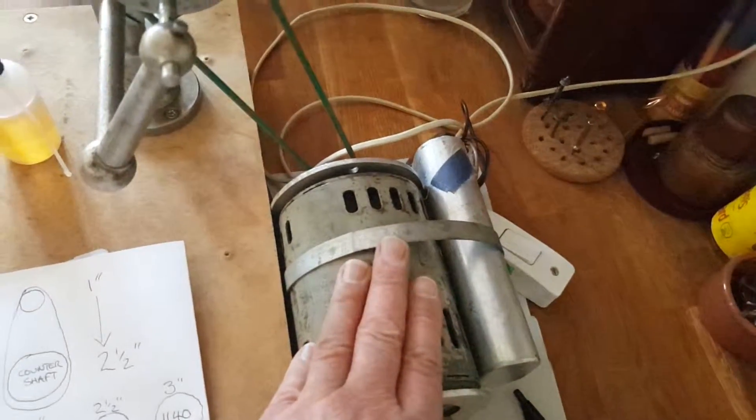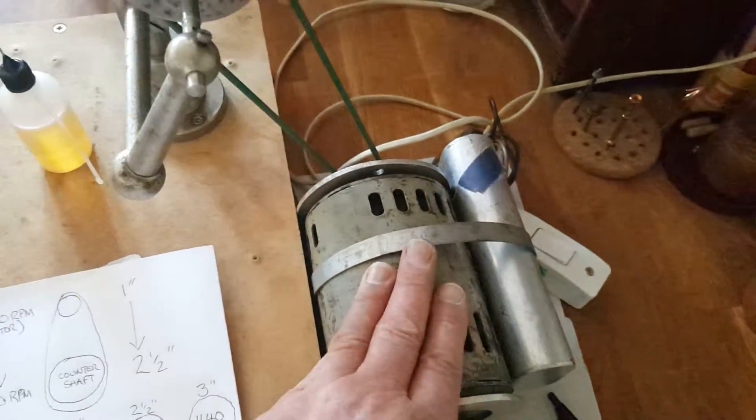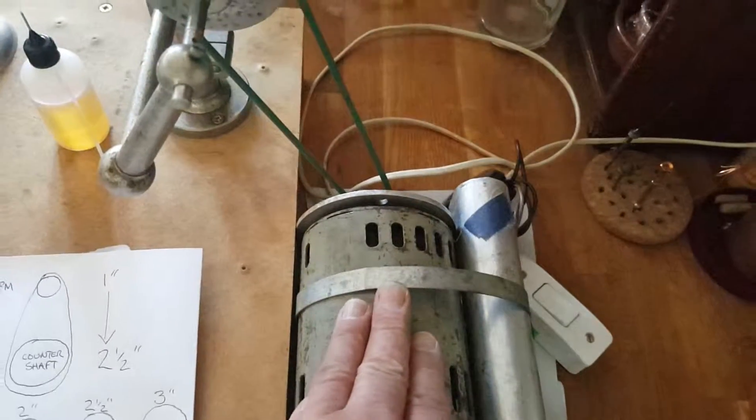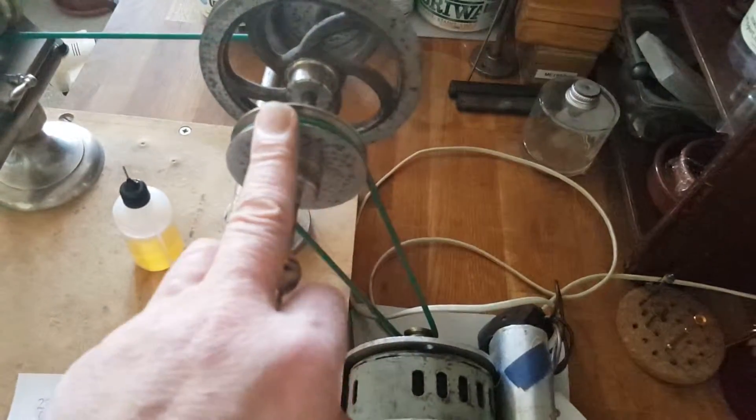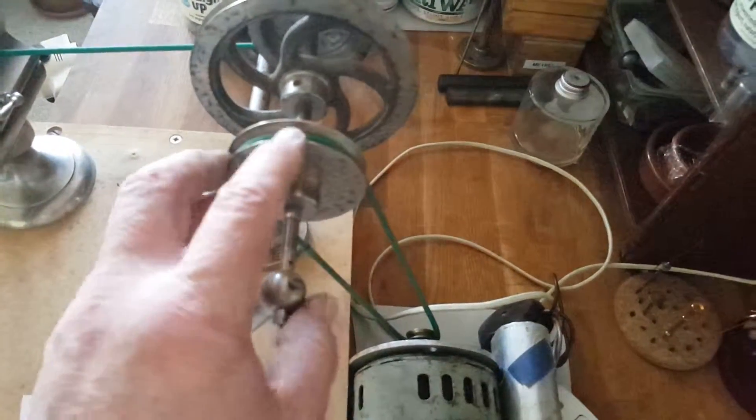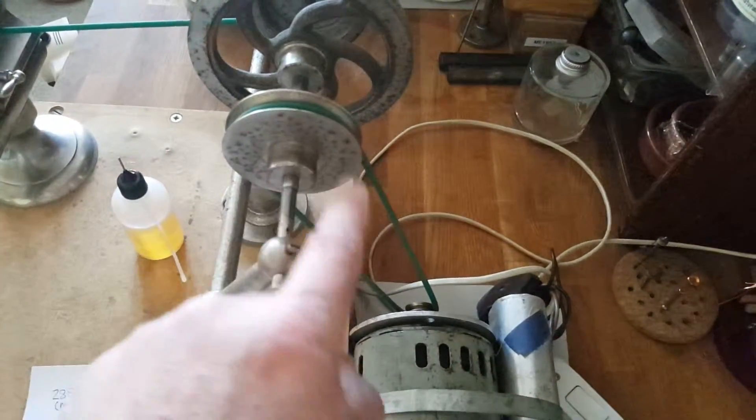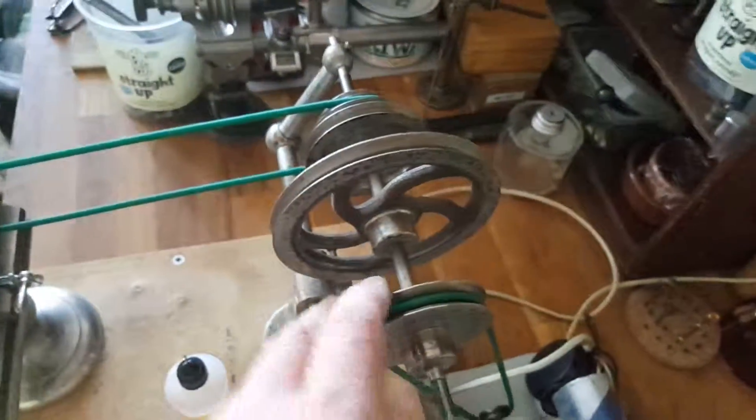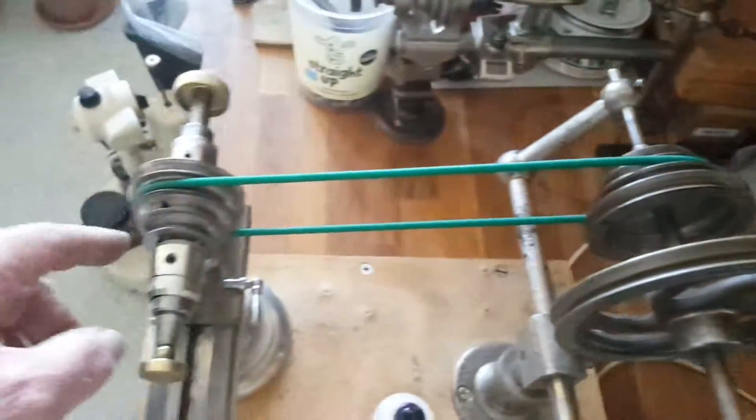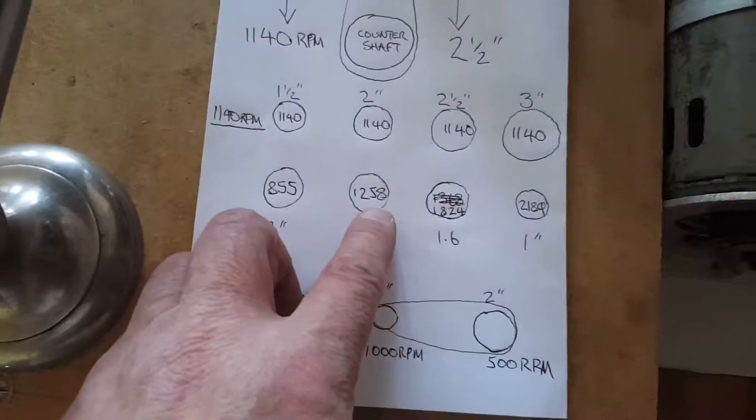Initially, you've got 2,850 RPM, which is way too fast to be dealing with. We reduce it down to a manageable speed, 1140, by reducing the gear through the ratio. And then we're able to tweak it further, a little bit more accurate, on these speeds.